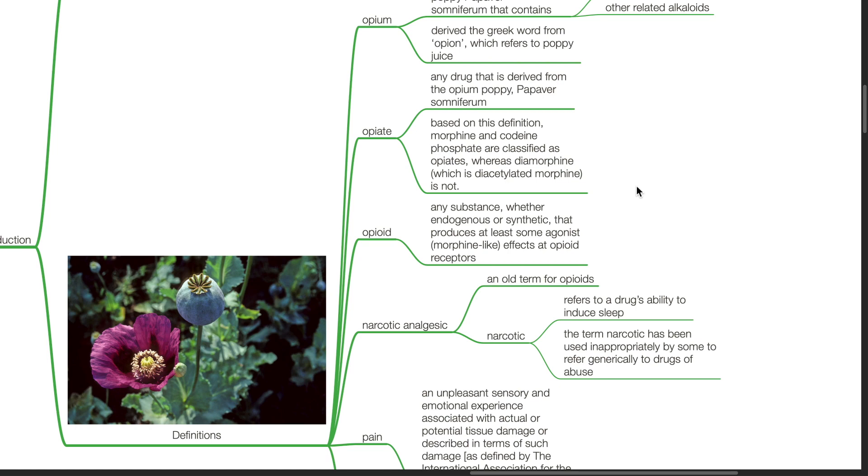Opioid refers to any substance, whether endogenous or synthetic, that produces at least some agonist or morphine-like effects at opioid receptors.